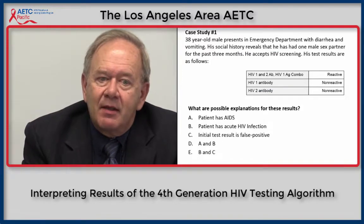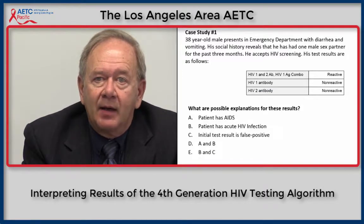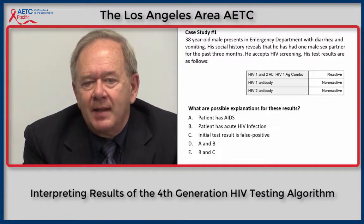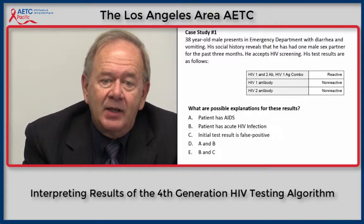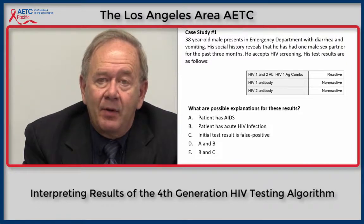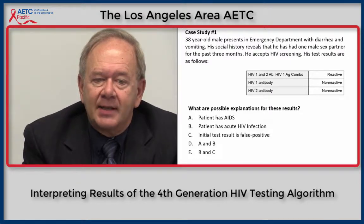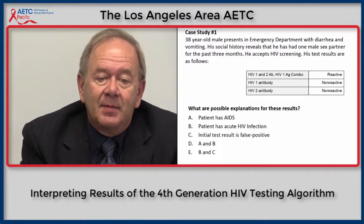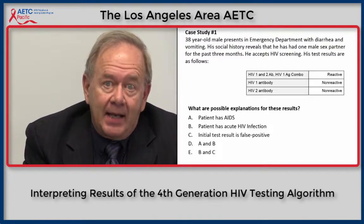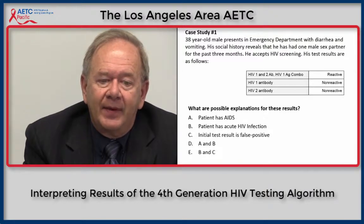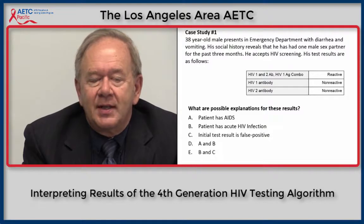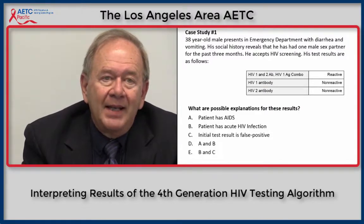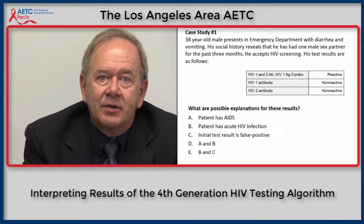That brings us to our first case study: a 38-year-old male who presents in the emergency department with diarrhea and vomiting. His social history reveals he has had one male sex partner for the past three months. He accepts HIV screening, and his results are: HIV-1/2 antibody-antigen combo assay is reactive; HIV-1 antibody and HIV-2 antibody on the differentiation assay are both non-reactive. Please select from the screen what the possible explanations are for these results — does it mean the patient has AIDS, has acute HIV infection, the initial test is false positive, or some combination of those?